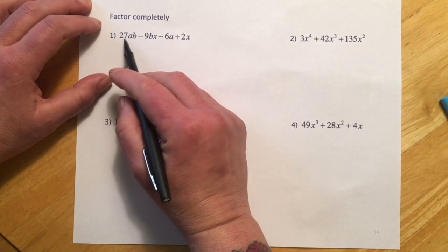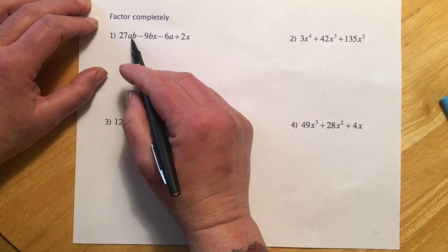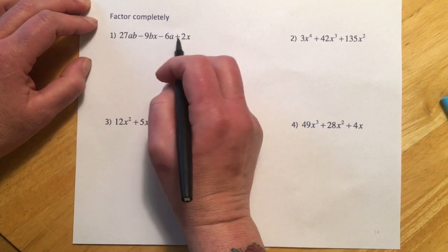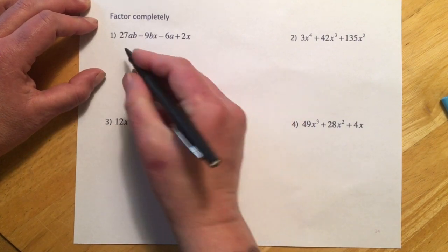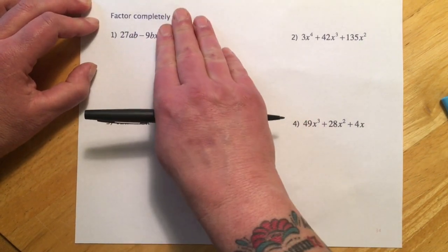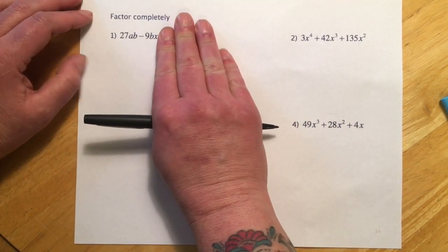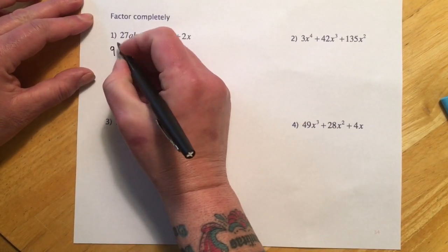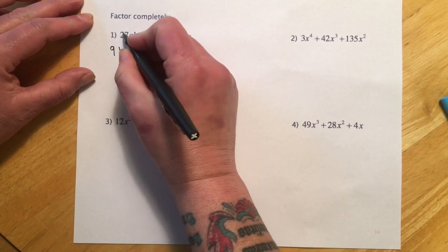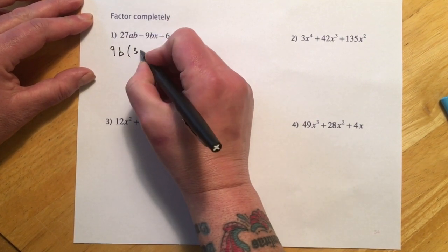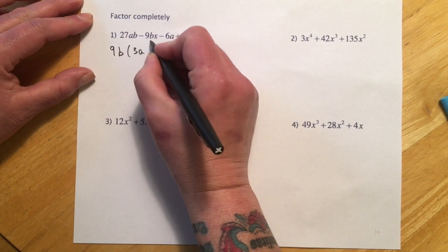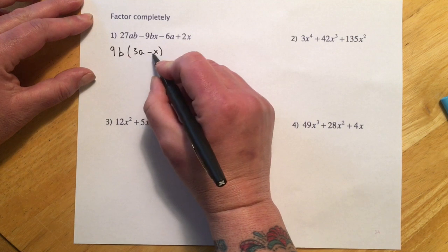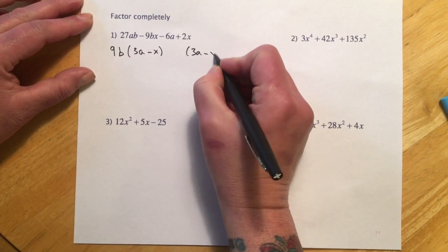So this first one we look and there is no GCF because nothing has the same letter and there's nothing, you know, the two and the nine aren't going to play, so that's not going to work. So then we go one, two, three, four terms. And so I look at these first two and I go, okay, well, what do those two have in common? And it looks like it's going to be a nine and a B. So we take a nine B out front and then nine goes in 27, three times and that A is still there, nine B, you can see it right there. So that's going to leave the X.